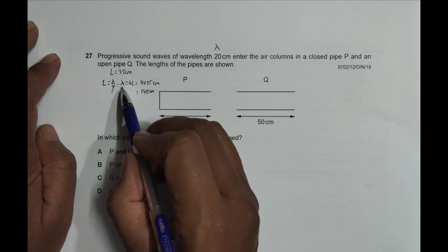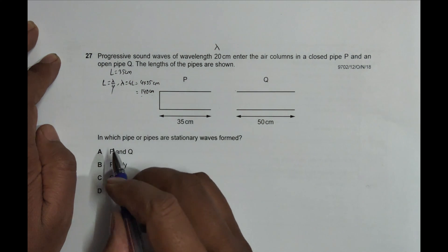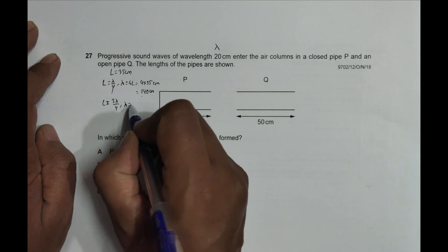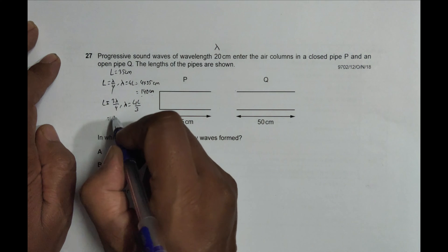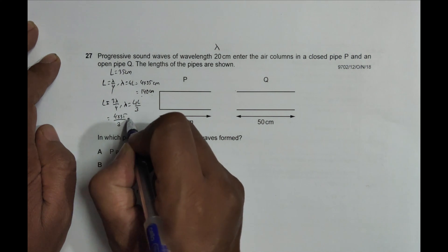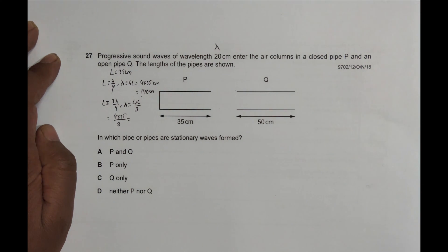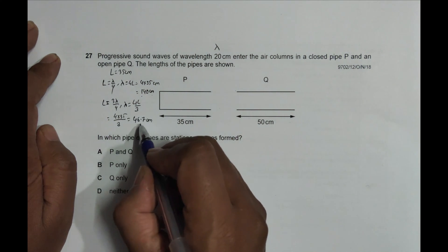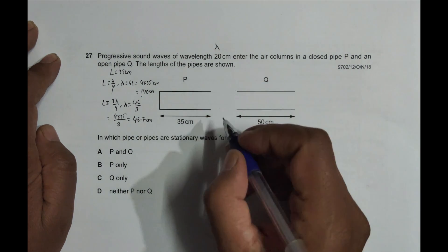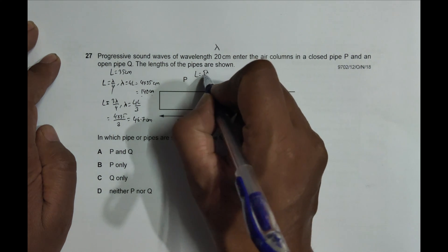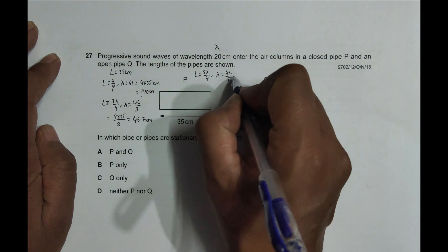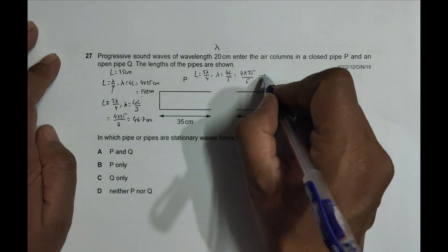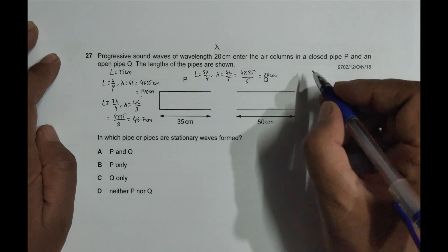So the first harmonic gives a wavelength of 140 cm — not 20 cm, so not correct. The next condition is L = 3λ/4, giving λ = 4L/3 = 4 × 35 / 3 = 46.7 centimeters — not 20, so not correct. The next condition is L = 5λ/4, giving λ = 4L/5 = 4 × 35 / 5 = 28 centimeters — again not correct.